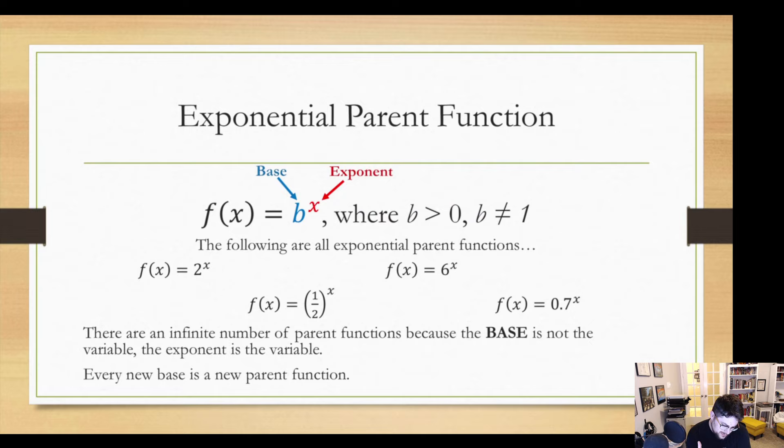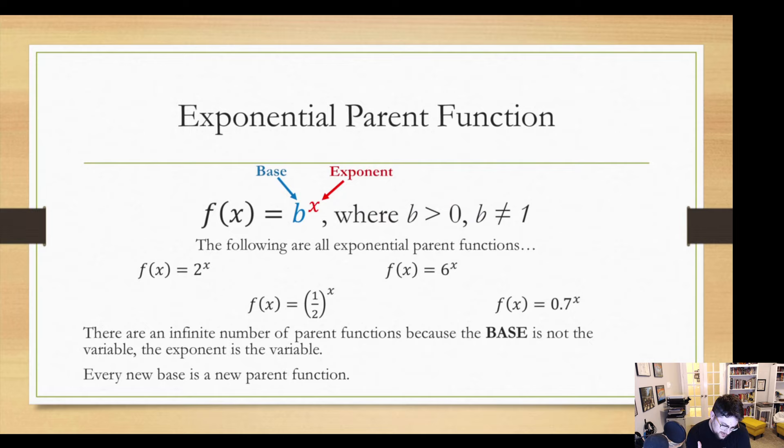Now the exponential parent function. Well there's not just one of them. Basically the whole idea of the parent function is we want the simplest possible function for a given function type. Exponentials are when we have some base, some number, and it's raised to the power of x. That means that number can be any number we want within some restrictions. I can have 2 to the x, 5 to the x, one half to the x, 0.7 to the x. Now the restrictions are the number has to be positive and can't be one.